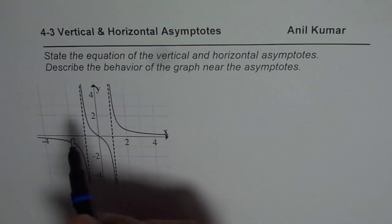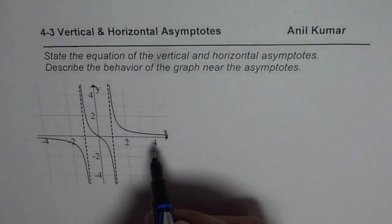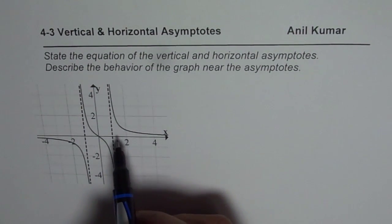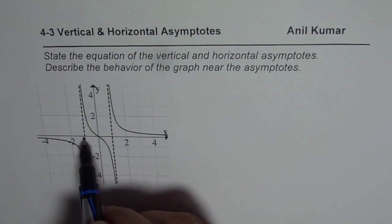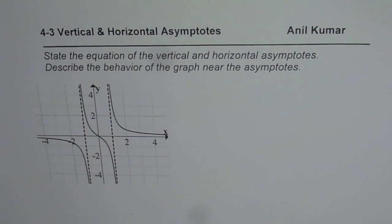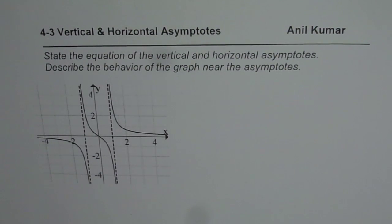The graph is given to you. As you can see, there are two vertical asymptotes and one horizontal asymptote. Write down what the asymptotes are and then describe the behavior of the graph of the function near the asymptotes. You can pause the video and answer the question.